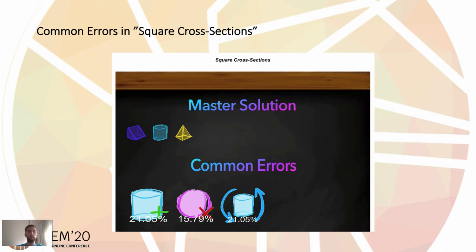And then we have the Common Errors visualization, which has the shapes in the master solution and then the most common errors. In this case, we see that 21% of the errors are related to the creation of cylinders.